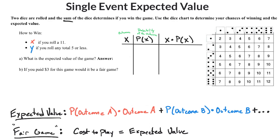Anytime you're working with the sum of two dice, this table is a great way to visualize all your different options. They each have six sides, so there are a total of 36 different outcomes that you could roll. But a lot of them are repeated — you can see that you have two 11s, you have six 7s, and so on and so forth.